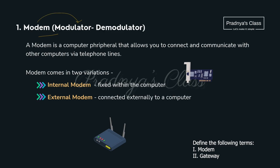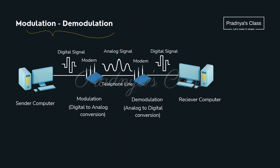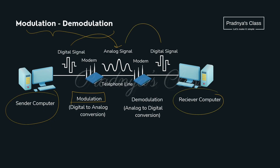The first network device is modem. The word modem is made up of two words: modulator and demodulator. It allows you to connect and communicate with other computers through telephone lines. A modem can be internal, fixed inside the computer, or external, connected externally to the computer. At the sender's computer, digital signals get converted to analog — this process is known as modulation. At the receiver's end, the analog signal gets converted back to digital — this is known as demodulation.